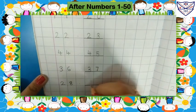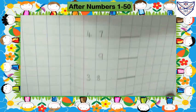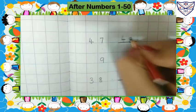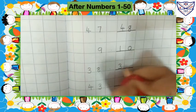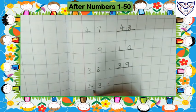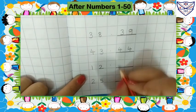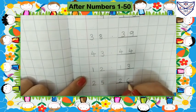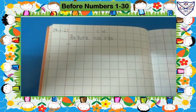What will come after 28? 29. So we will write here 29. Next page: what will come after 47? 48. So we will write here 48. What will come after 9? 10. So we will write 10. What will come after 38? 39. So we will write 39. What will come after 43? 44. What will come after 12? 13. What will come after 25? 26.